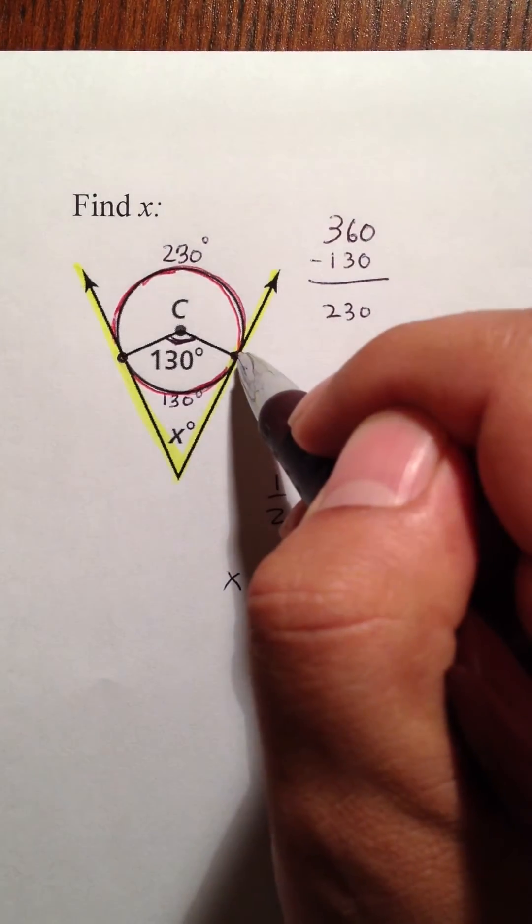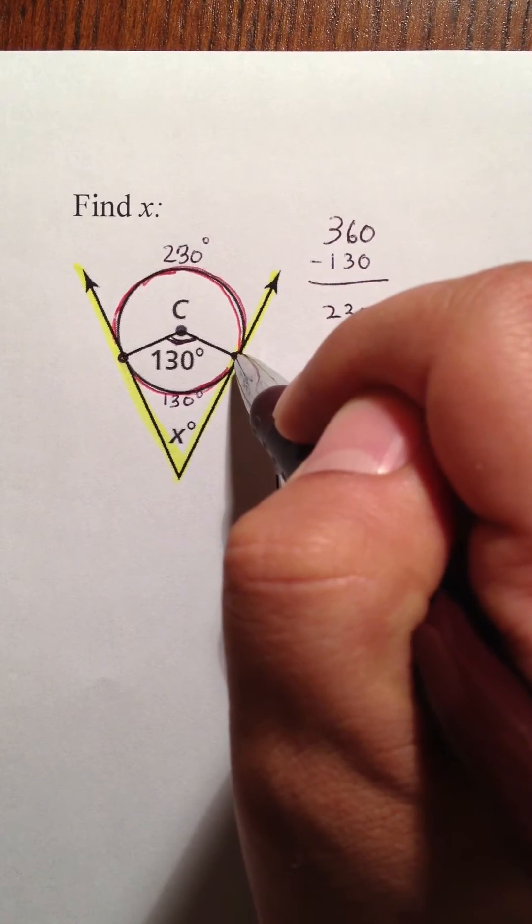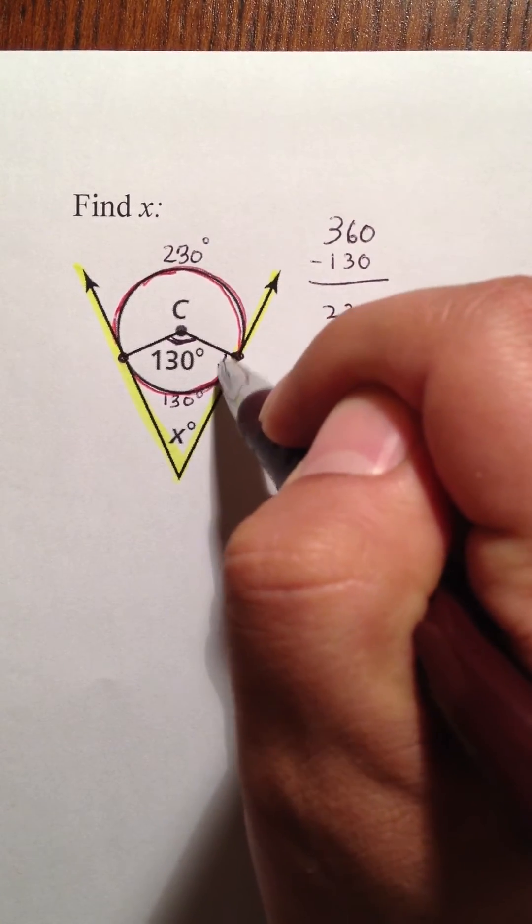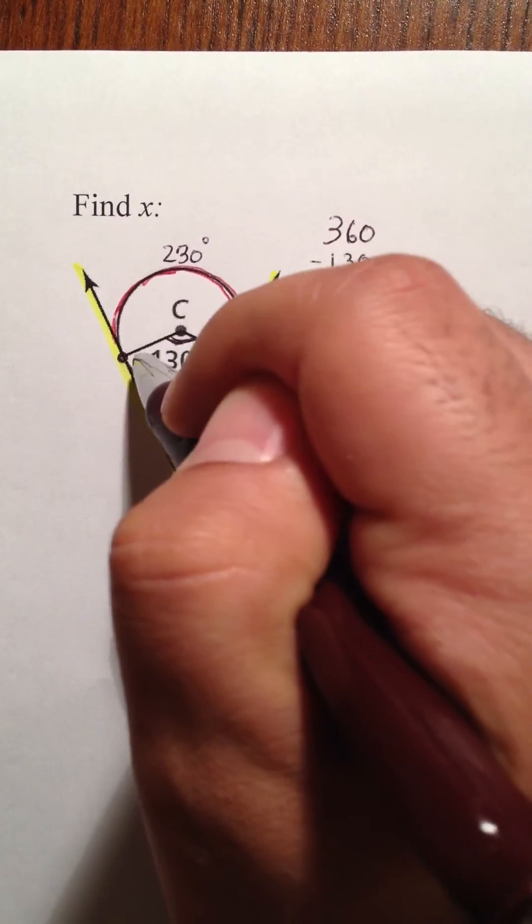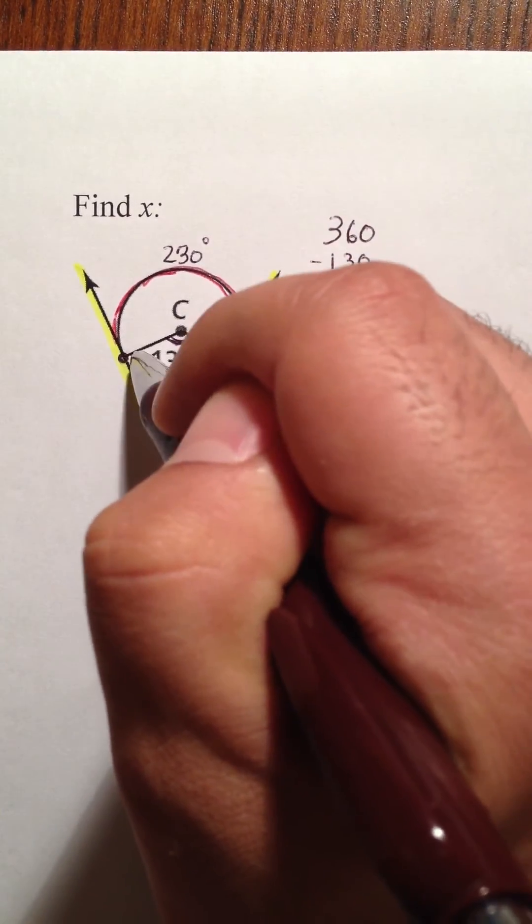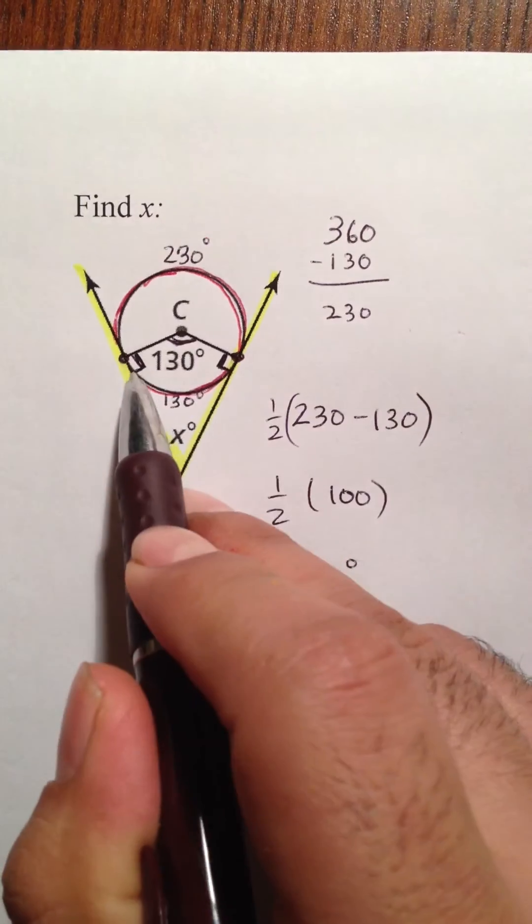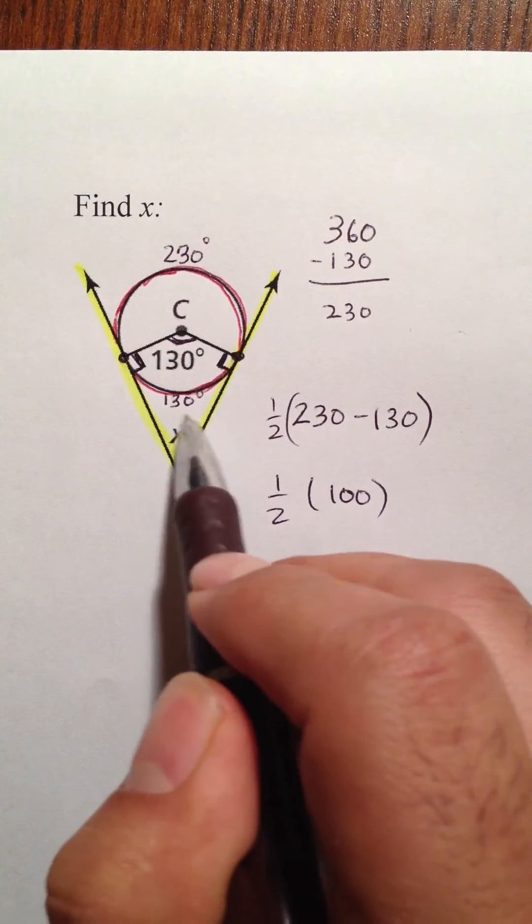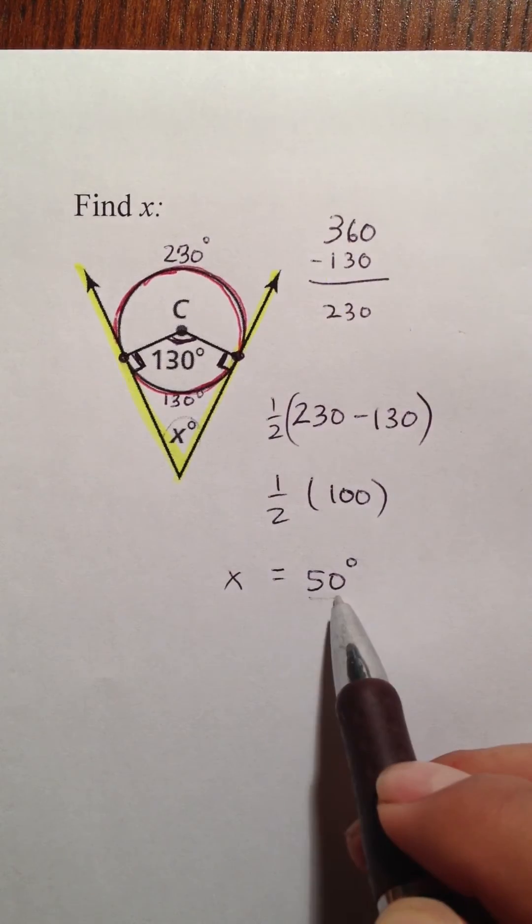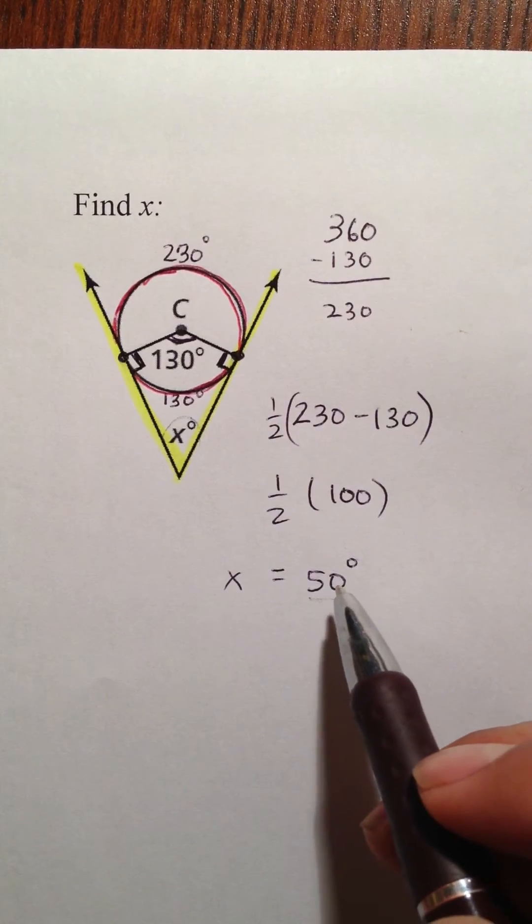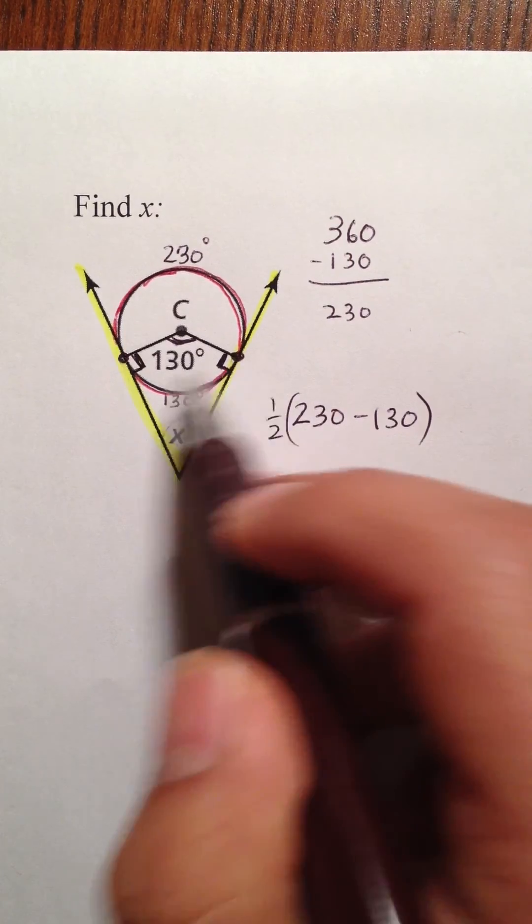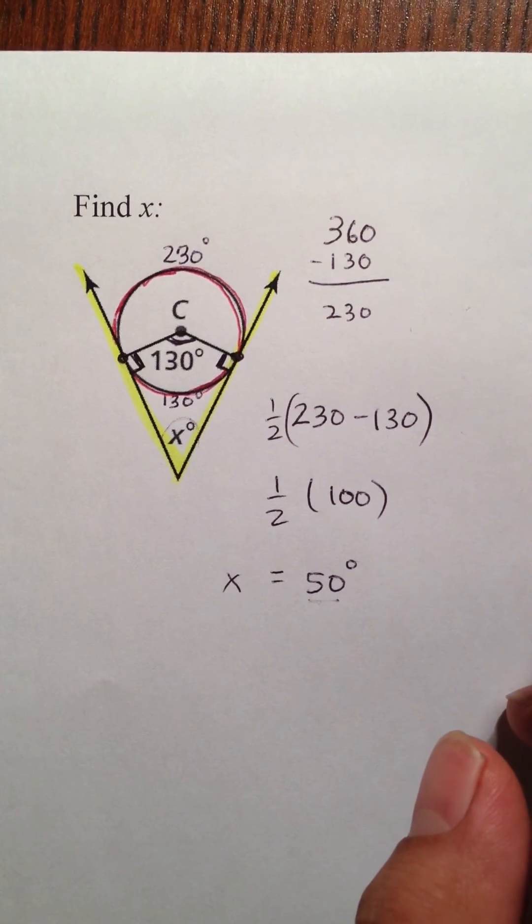One of the rules with tangents and circles is if a tangent point is connected to the center of the circle, it creates a 90 degree angle. And since we have two of them, 90, 130, 90, and this creates 360. Because technically, this is a four-sided shape, which is a polygon, and that also equals 360 degrees.